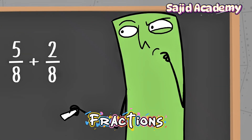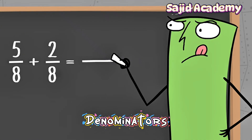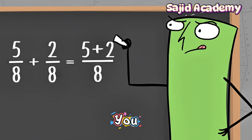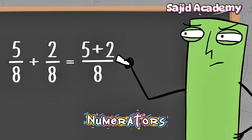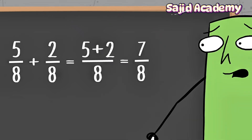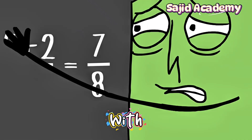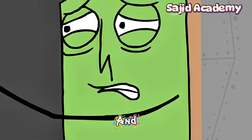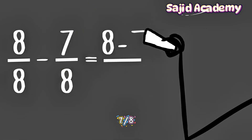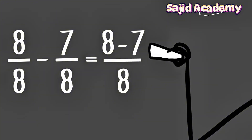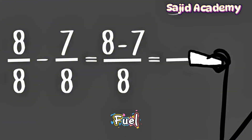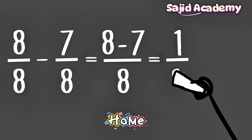To add fractions that have the same denominators, you add together the numerators. And if you started with eight-eighths, and you've used seven-eighths, how much fuel do you have left to get home?